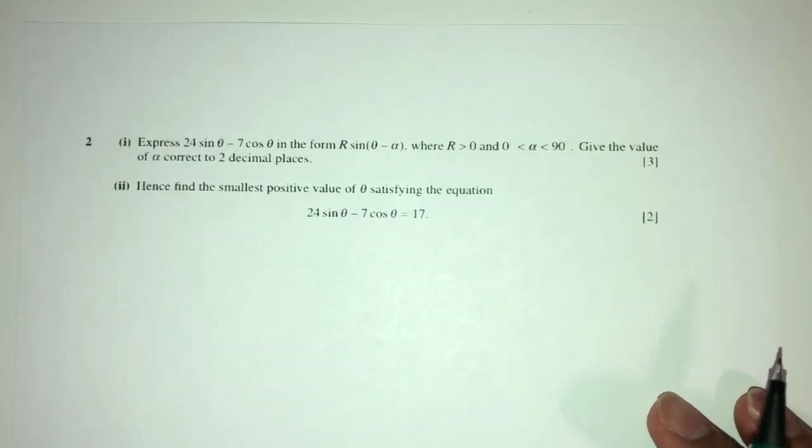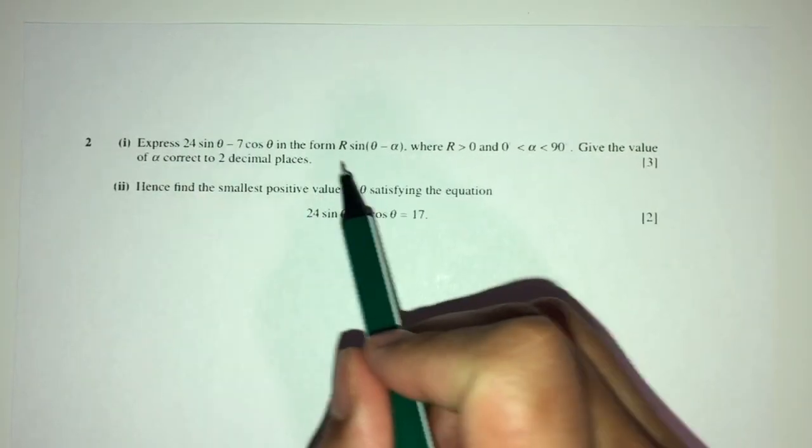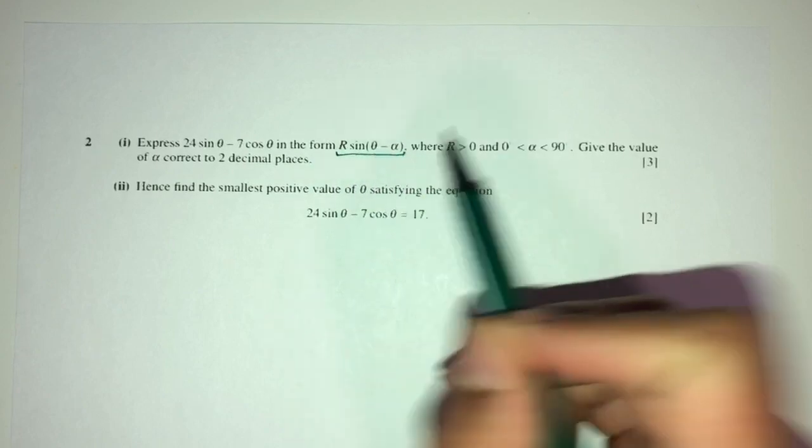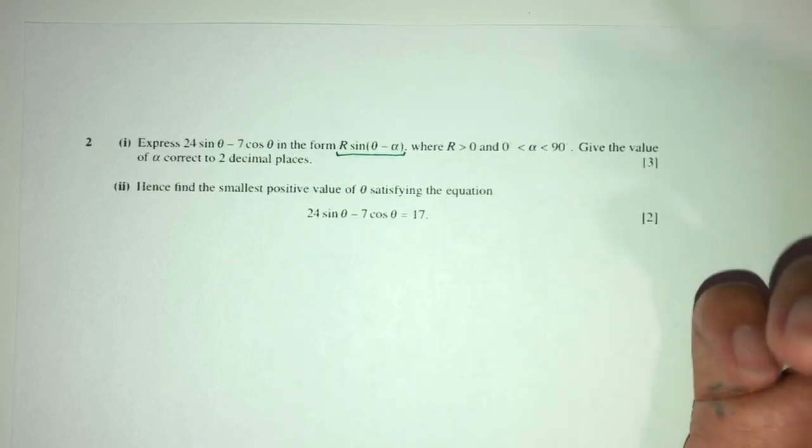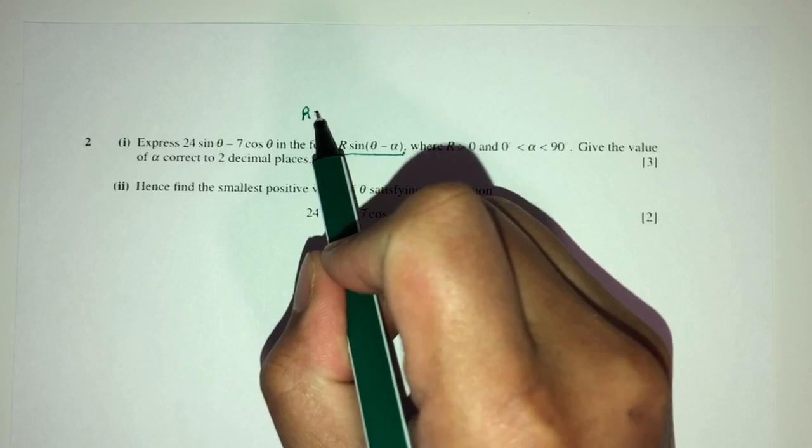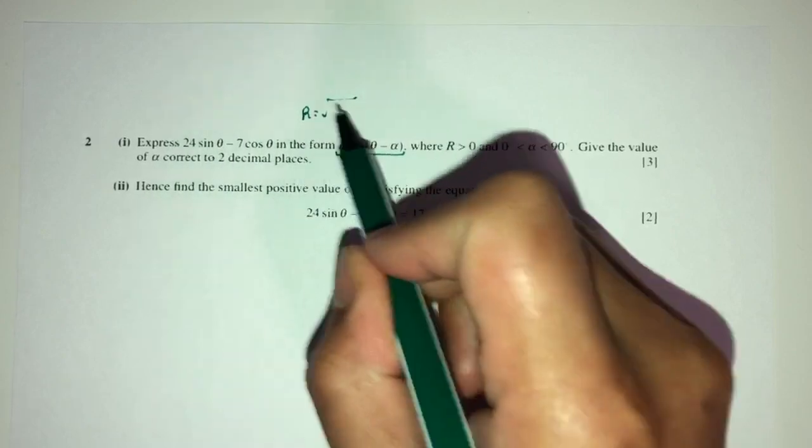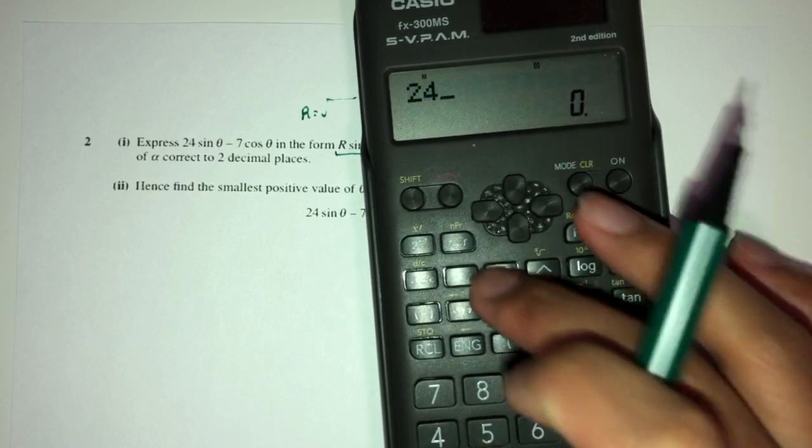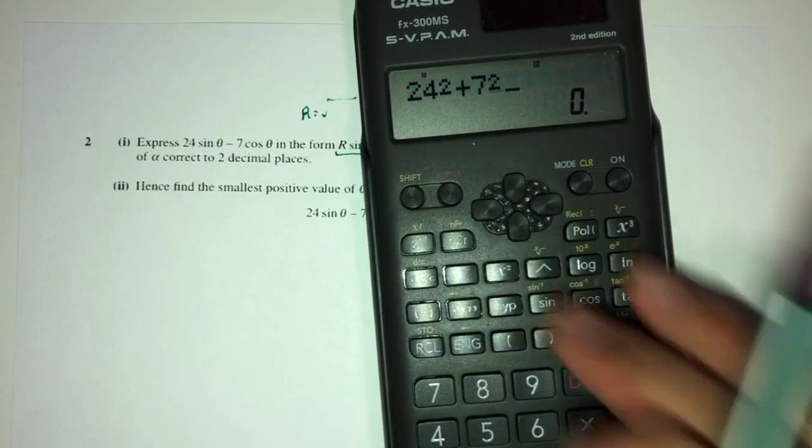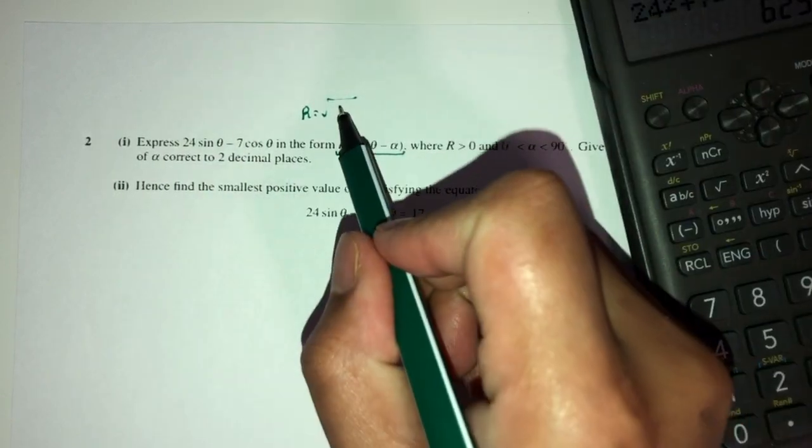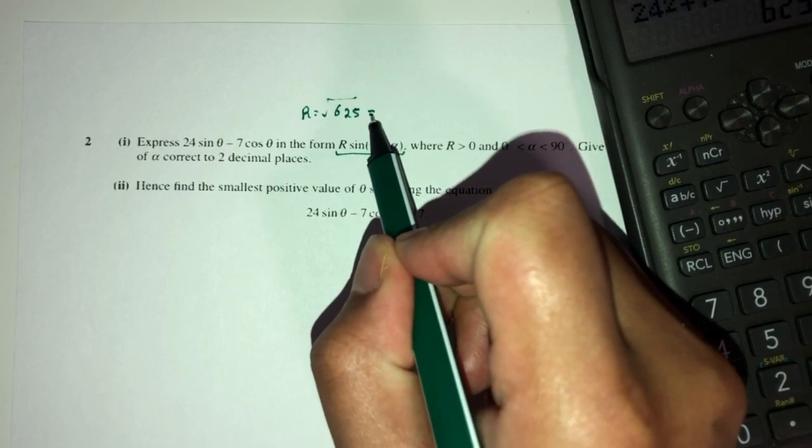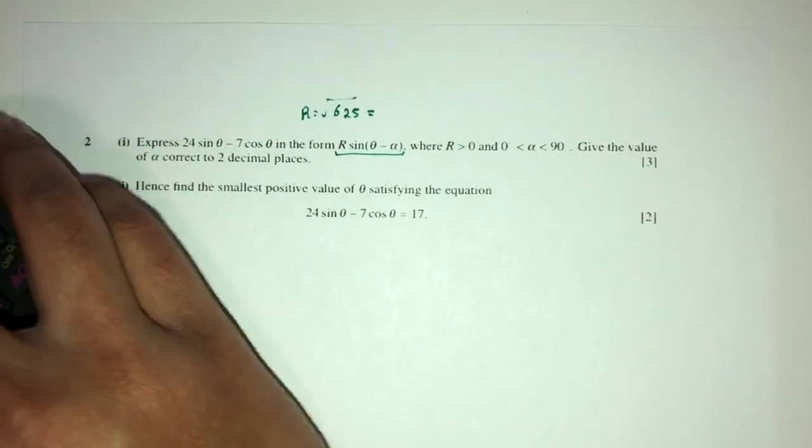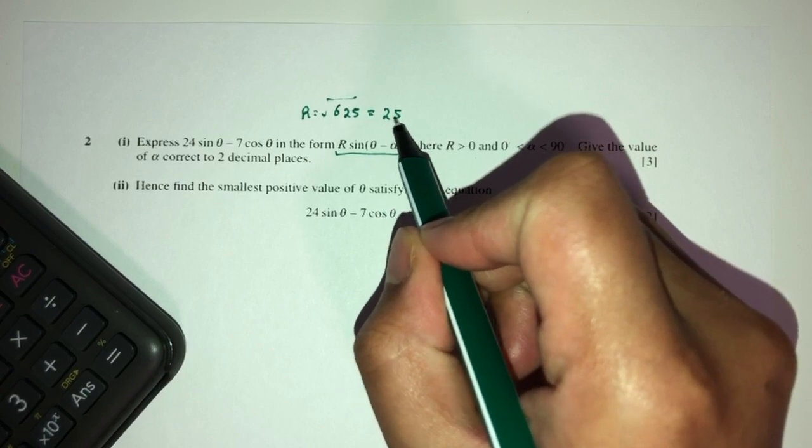Now let's move on to question number 2. So here we have to express this thing over here in this form. So obviously, this is just formula. We have to know. So r will be the value of square root of 24 squared plus 7 squared. That'll be 625. Square root of that will give you 25. So r will be the value of 25 in this question.